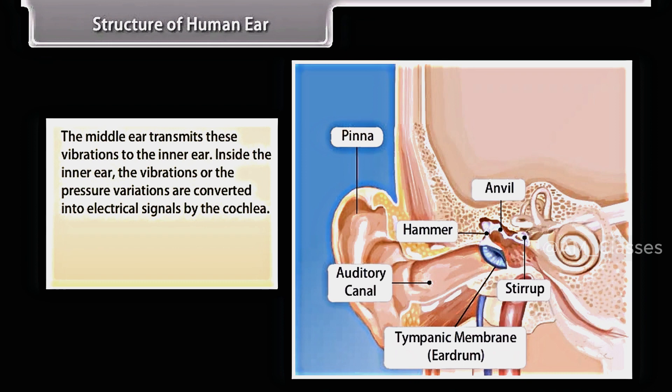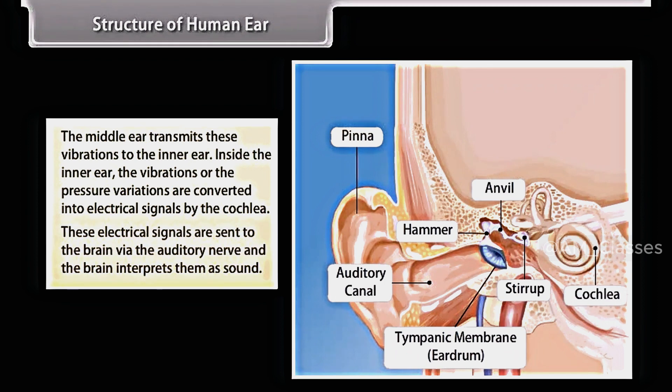Inside the inner ear, the vibrations or the pressure variations are converted into electrical signals by the cochlea. These electrical signals are sent to the brain via the auditory nerve and the brain interprets them as sound.